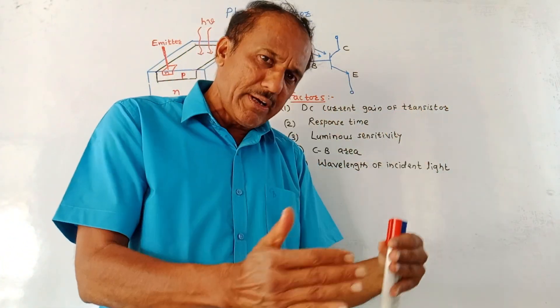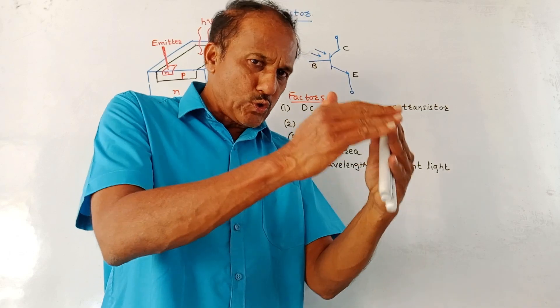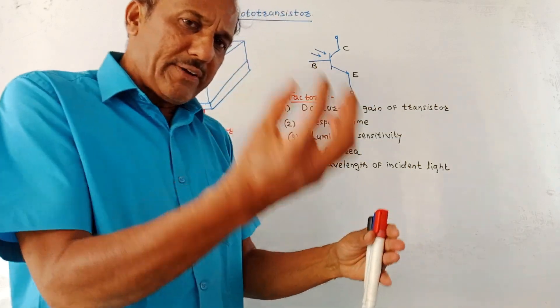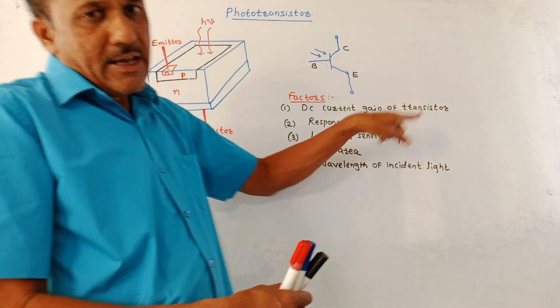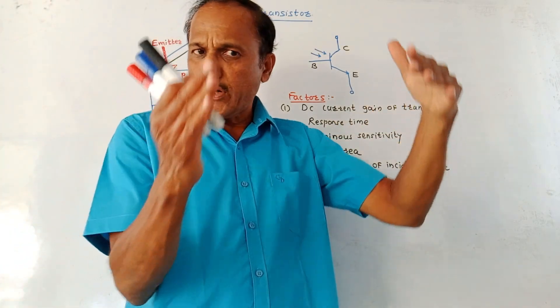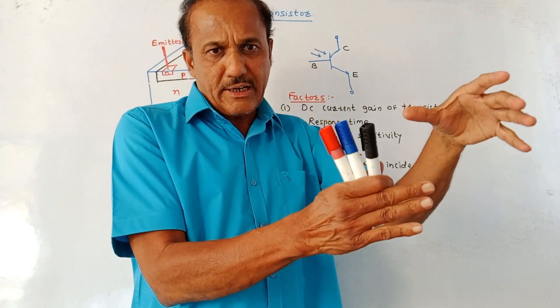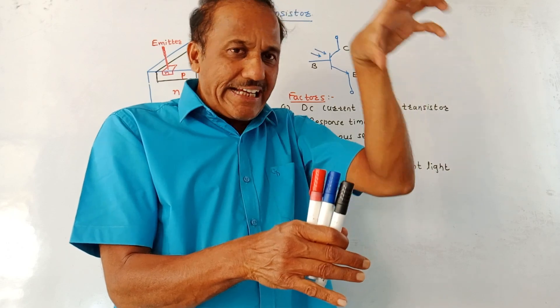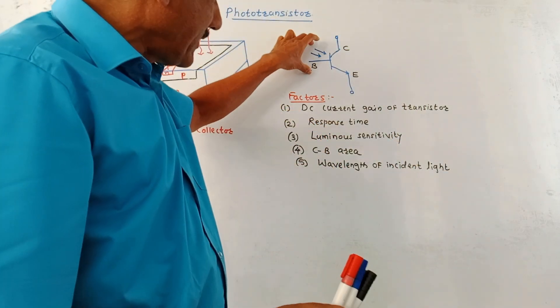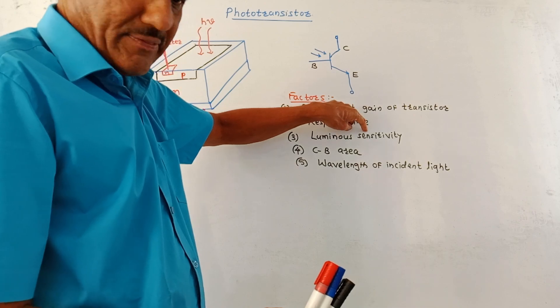As the name indicates, it is the time taken by the transistor to generate the output current whenever the light is falling on the base terminal. Then luminous sensitivity. It is basically related to the ratio of photon current, that is output current to the amount of light intensity falling on the base terminal. This is related to luminous sensitivity.